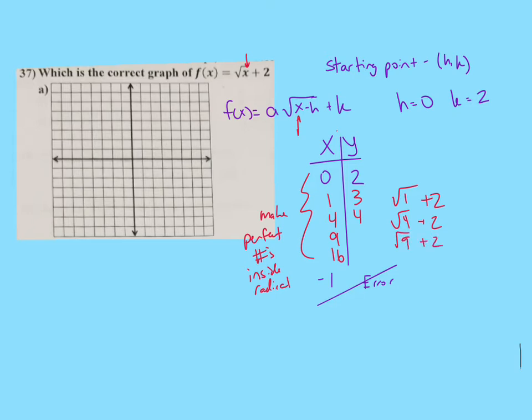So the square root of 1 plus 2. The square root of 1 is 1. 1 plus 2 is 3. So this becomes 3. Now I'm going to do the same thing with 4. So I put the square root of 4 plus 2. So 2 plus 2 is 4. Now I do the square root of 9 plus 2. Like I said, you could pick any number. You could pick 1, 2, 3, 4, 5. I like to pick these so that I don't have anything messy come up. I end up with 5. And then if you really want to do 16, the square root of 16 is 4. 4 plus 2 is 6.